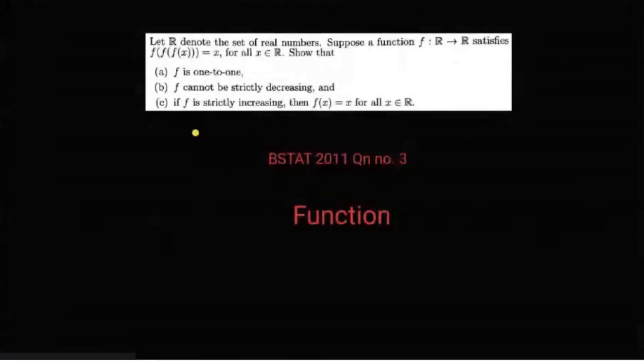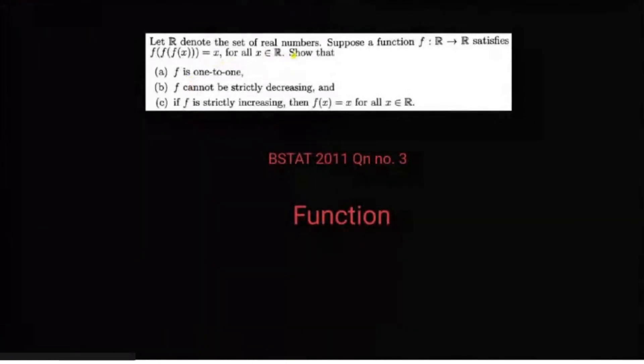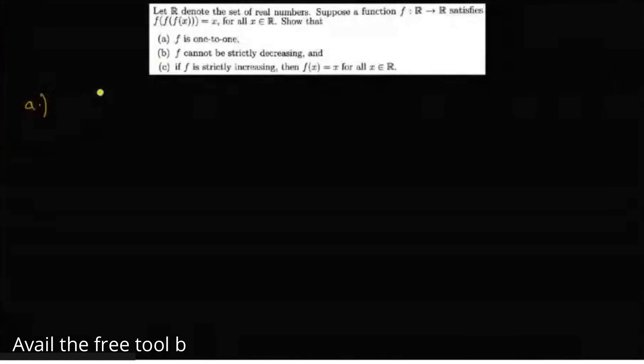Here it is given that X is a set of real numbers, R is a set of real numbers, and F maps from R to R satisfying a given condition. We are going to prove three things. We are going to prove that F is one-one (injective).